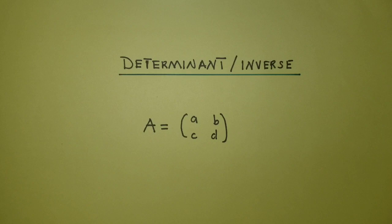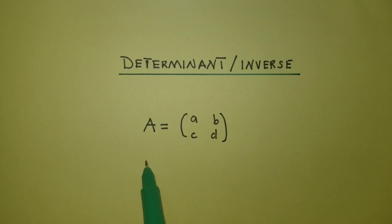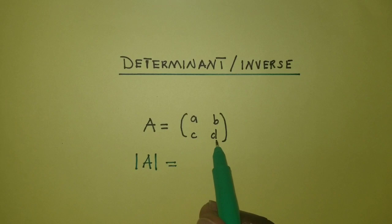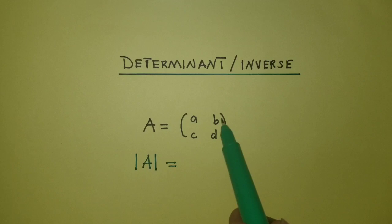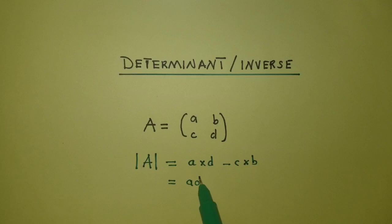We shall start with the determinant. Let's say you have been given a matrix like this one: matrix A is equal to a b c d, and they want you to find the determinant. To find the determinant, we copy the matrix and put the bars like this. We change the major diagonal — we multiply the major diagonal minus the multiplication of the minor diagonal. The major diagonal is this one here, the minor diagonal is this one, so it will be a times d minus c times b. This gives us ad minus cb, which is our determinant.